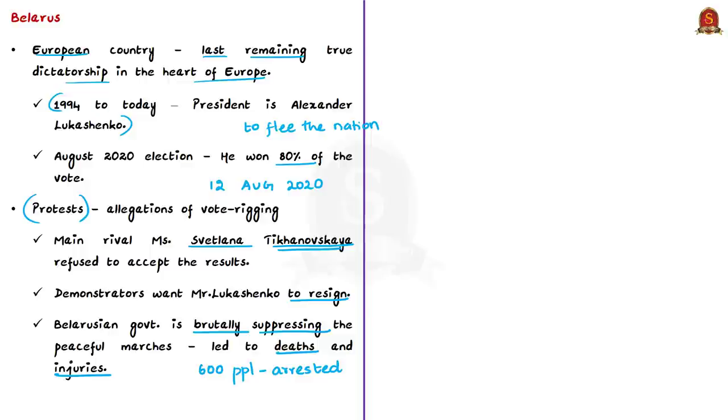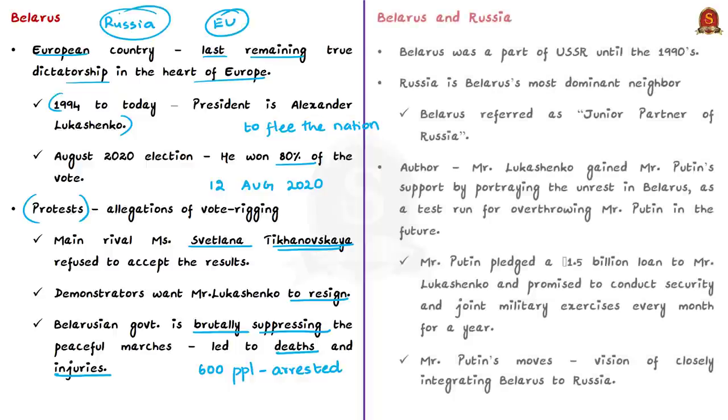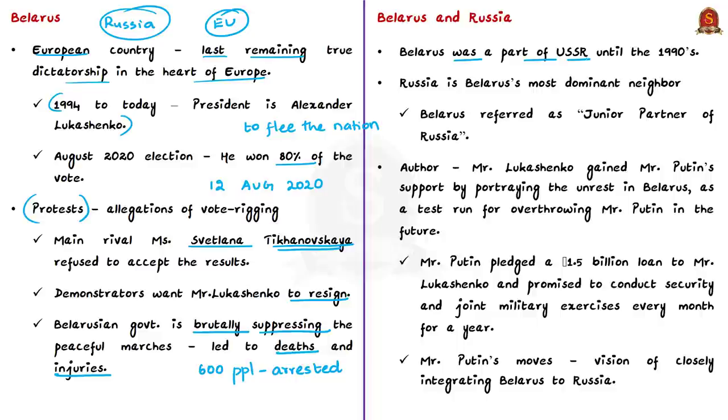With respect to Lukashenko's rule, two entities have a major say: Russia and the European Union. Belarus was part of USSR, the Union of Soviet Socialist Republics, until the 1990s. After the disintegration of Soviet Union, Belarus retained close ties to Russia. Russia is Belarus' most dominant neighbor, leading to saying Belarus as the junior partner of Russia.